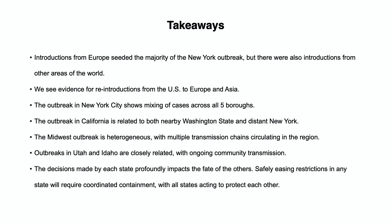In conclusion, here are some takeaways from our report. Introductions from Europe seeded the majority of the New York outbreak, but there are also introductions from other areas of the world. As the outbreak has progressed, we also see evidence for reintroductions from the U.S. to Europe and Asia. The outbreak in New York City shows mixing of cases across all five boroughs. The outbreak in California is related to both nearby Washington State and distant New York. The Midwest outbreak is heterogeneous, with multiple transmission chains circulating in the region. The outbreaks in Utah and Idaho are closely related with ongoing community transmission. The decisions made by each state profoundly impacts the fate of the others. Safely easing restrictions in any state will require coordinated containment with all states acting to protect each other.